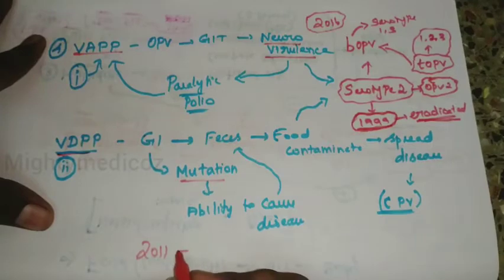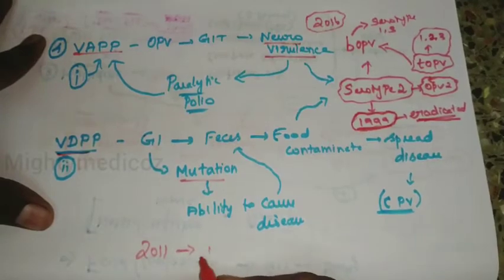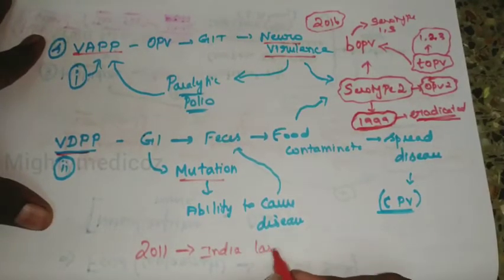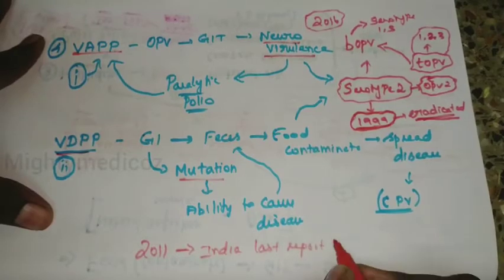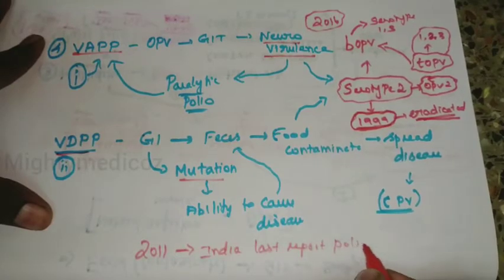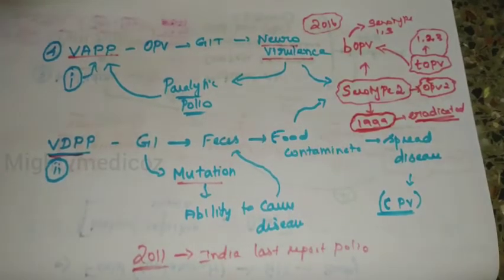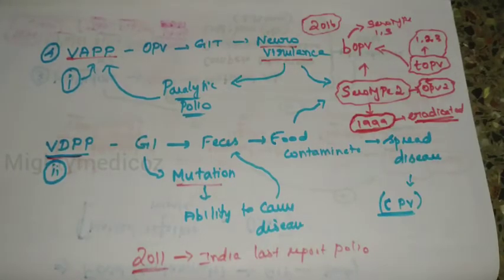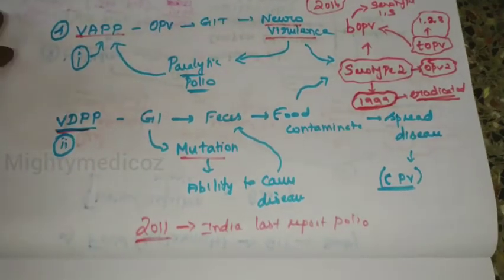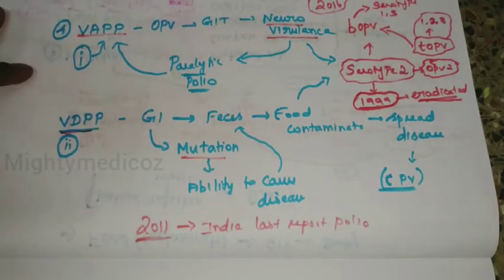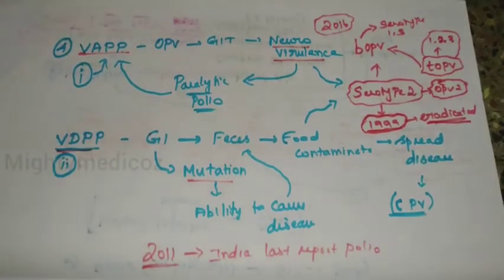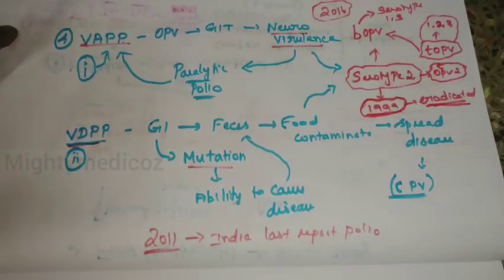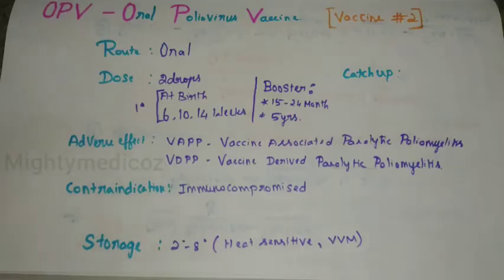In 2011, India reported its last polio case. That is a significant milestone. We need to eliminate polio completely. After knowing all these details, let us talk about the proper use of OPV.